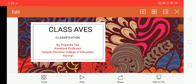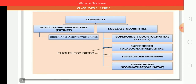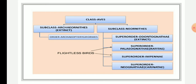Class Aves is classified or divided into two subclasses based on their characteristics. Subclass one is called Archaeornithes and subclass two is termed as Neornithes.